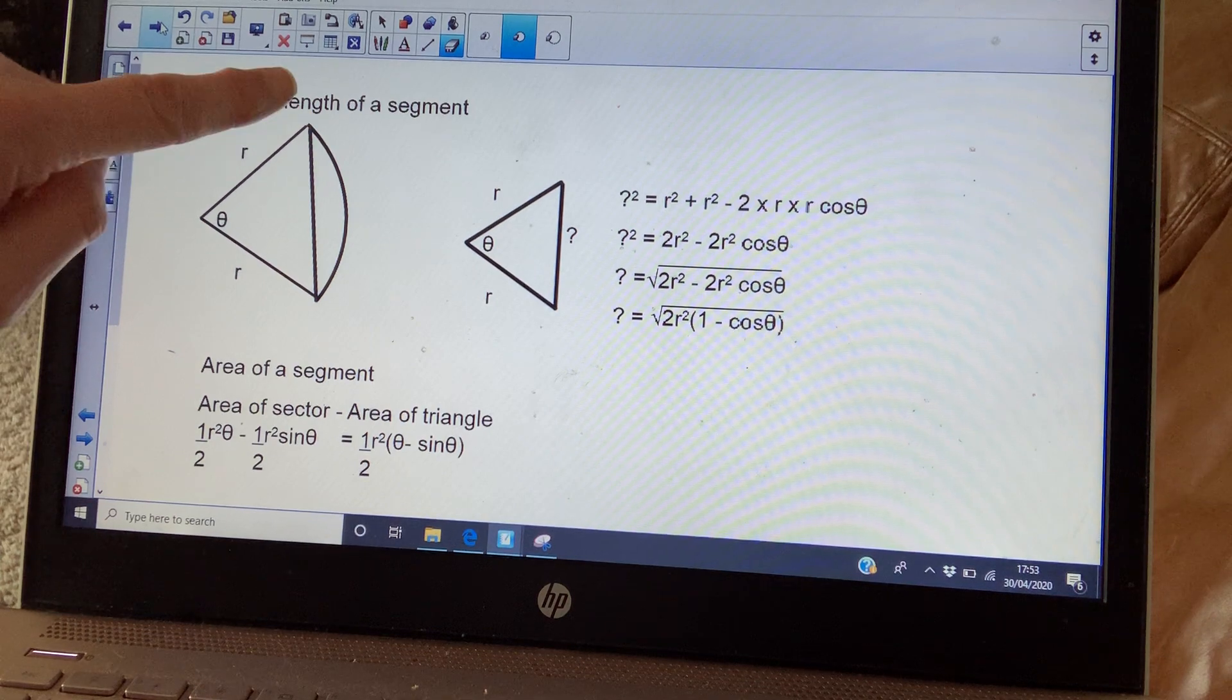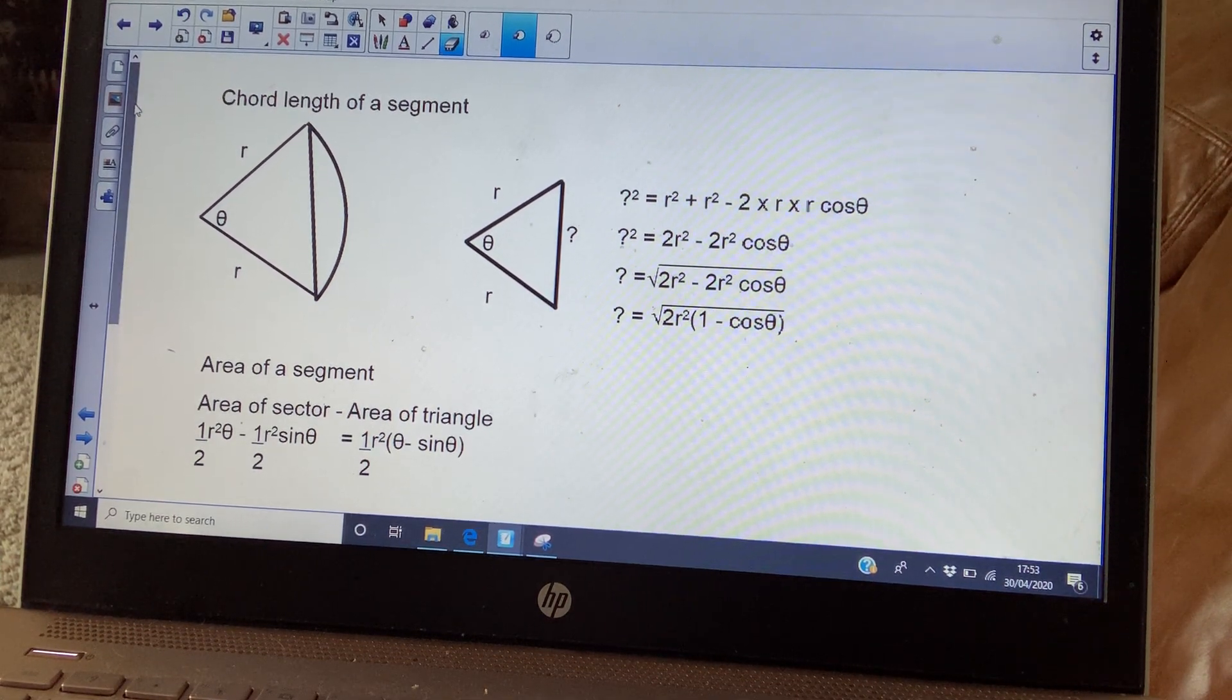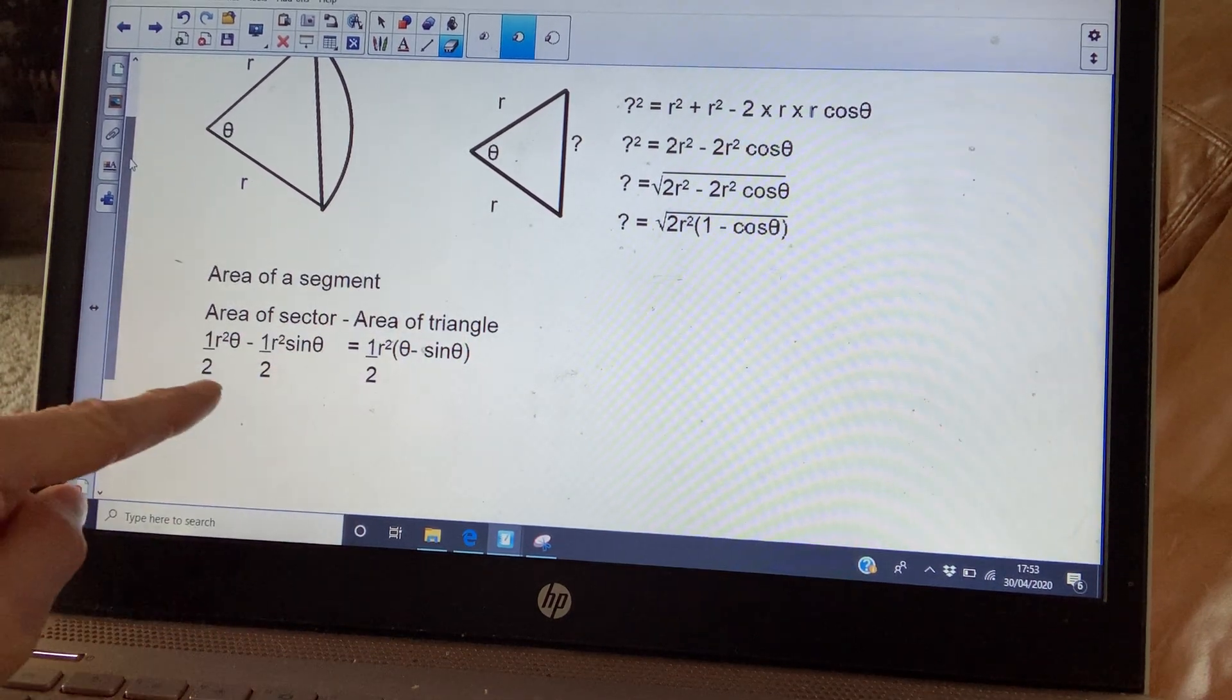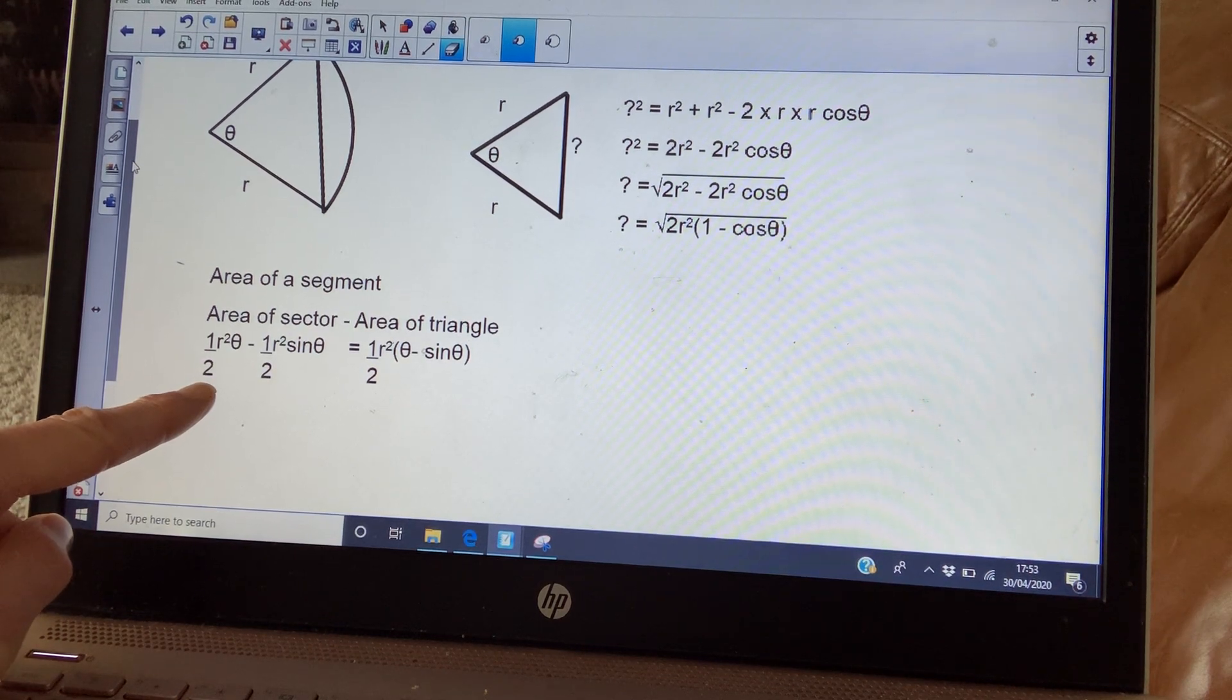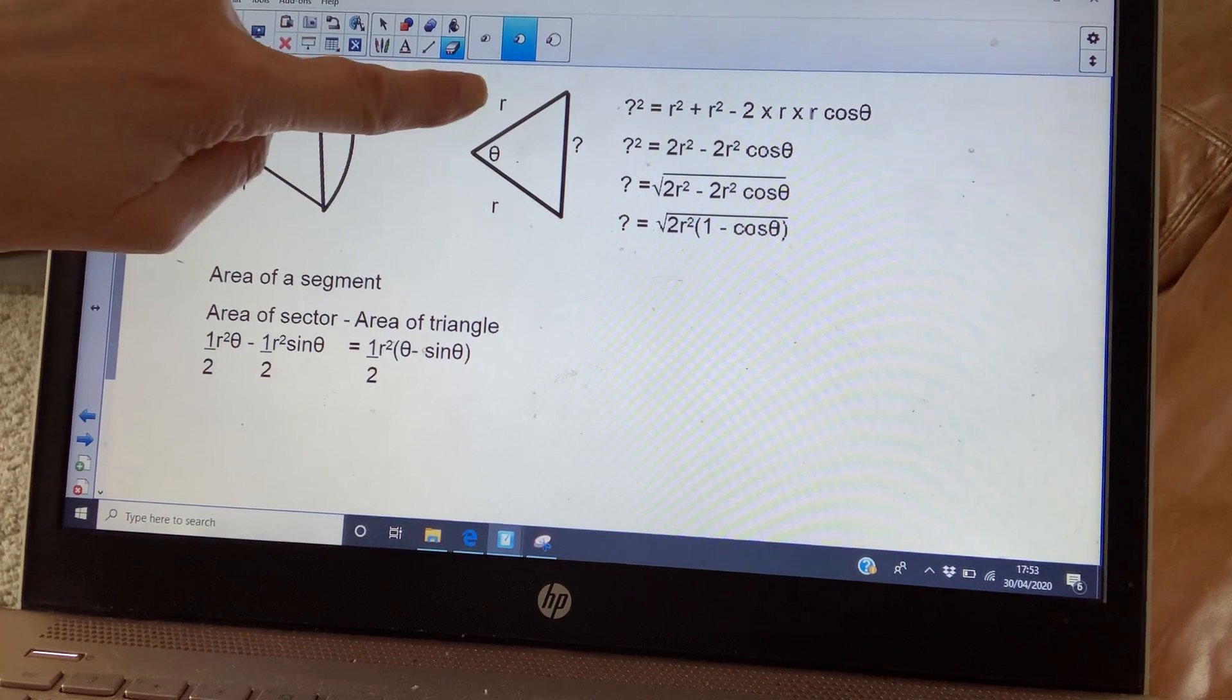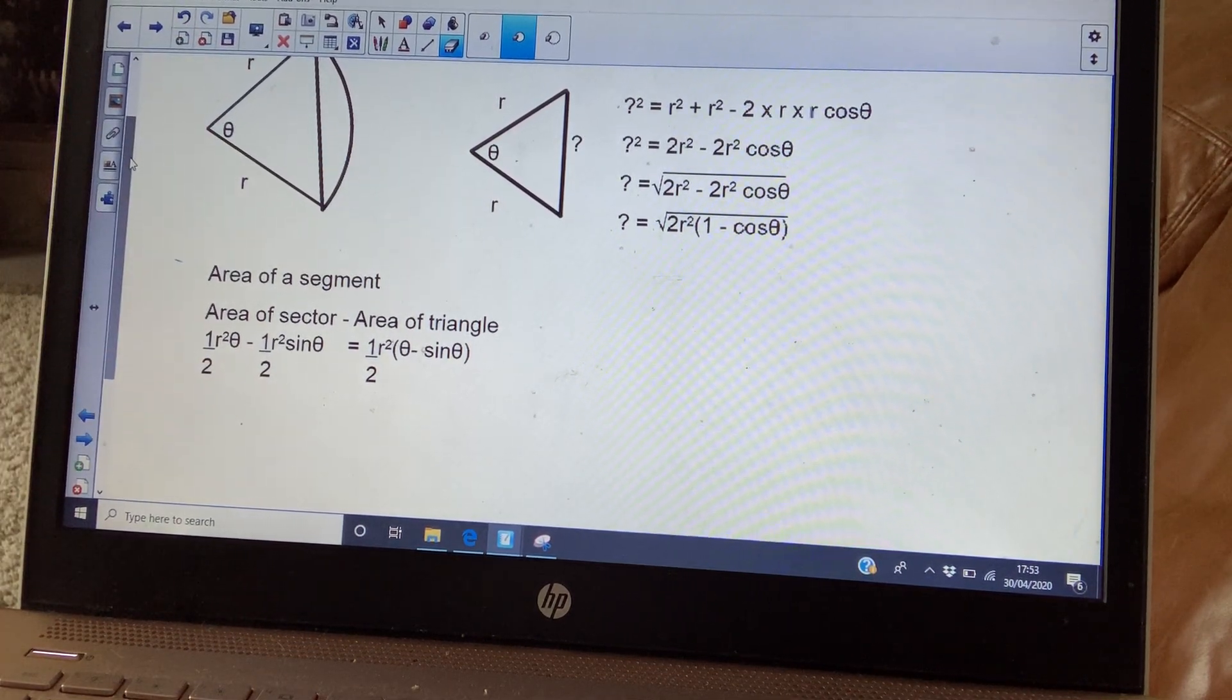If you wanted to find the area of the segment, you would do what we've just done with numbers. You would find the area of the sector and take away the area of the triangle. So your area of your sector is a half R squared theta. And there's the area of your triangle, a half AB sine C. So a half R squared sine theta. And then all I've done is I've taken out a factor of a half R squared, leaving you with that formula.